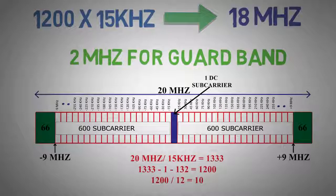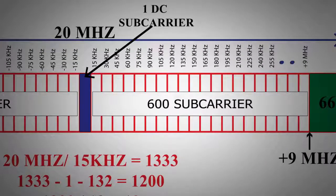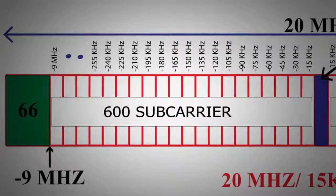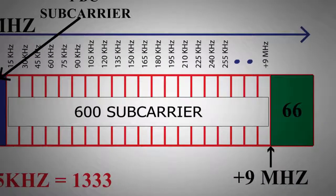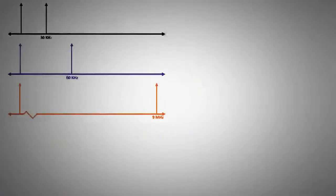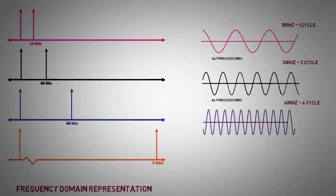Here we have 600 sub-carriers on both side of the DC frequency. All these carrier frequencies are harmonics of 15 kilohertz, varying from minus 9 megahertz to 9 megahertz. In time domain, these sub-carriers will be represented as everlasting sinusoids at these carrier frequencies as shown.